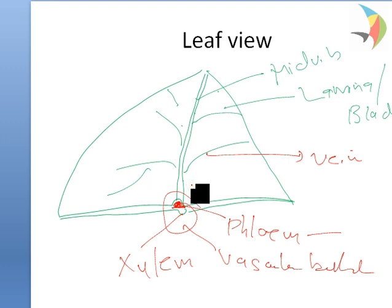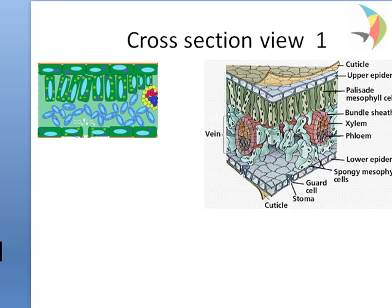Now when we go into the detailed structure of a leaf, you see this cross section of a leaf structure. This forms the upper part which is called a cuticle. This is the cuticle part, this is much more clear.